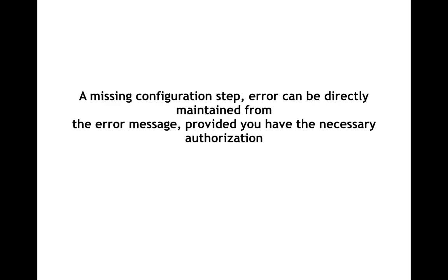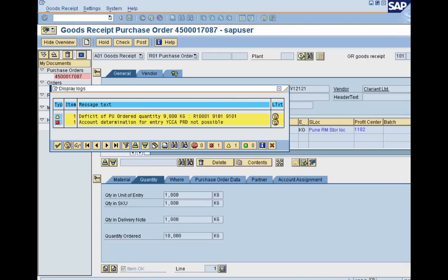In this presentation I'm going to share how we can maintain configurations directly from an error message. Normally in interviews, they will ask you: this particular configuration is missing, or we are getting this error — how can we resolve it? I can't show you the live system here as these are collected errors, so I'll use a PPT. This is an error I captured while creating a GR (Goods Receipt).